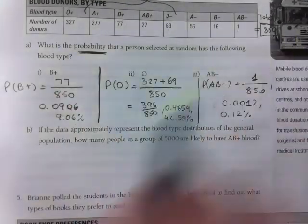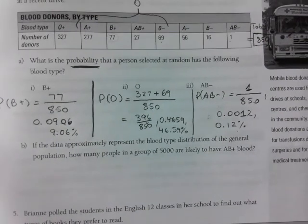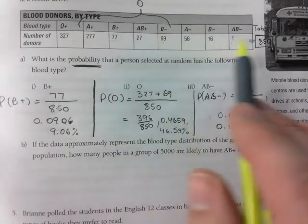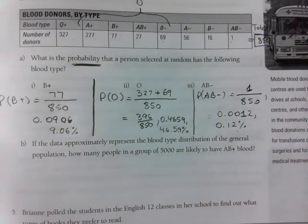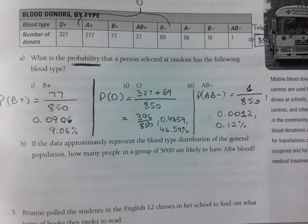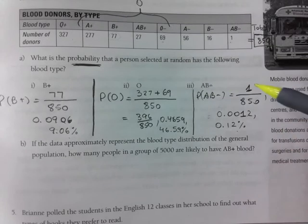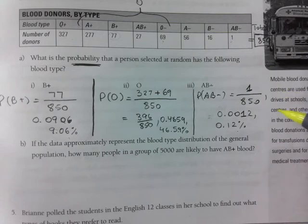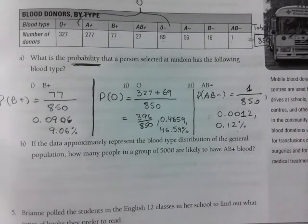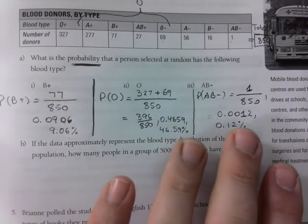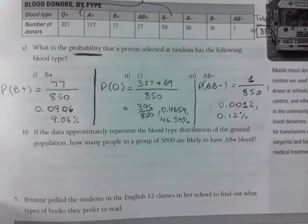Be comfortable with charts — I'll put quite a few charts on worksheets and assessments. Get your total and then grab the numbers and plug them in. Question of the day: what's the probability of someone NOT having AB negative? It would be 849 out of 850, because if one out of 850 has AB negative, then 849 out of 850 do not. I ask quite frequently what's the probability of not getting something.